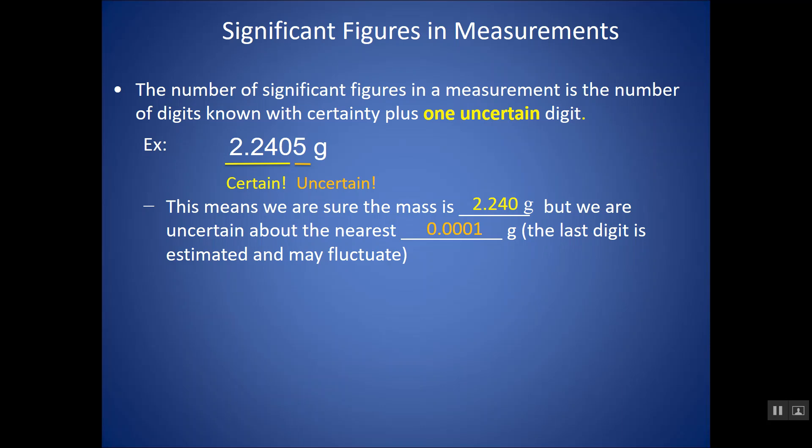So again, what we're doing is we're really recording the digits known with certainty plus one uncertain digit. So what does that mean when we're looking at a piece of lab equipment?